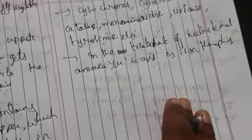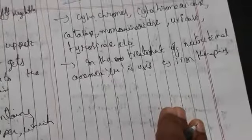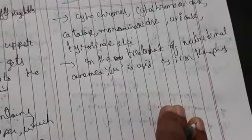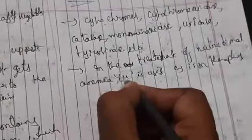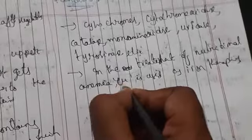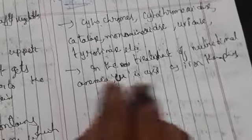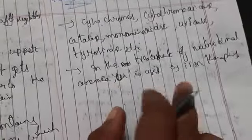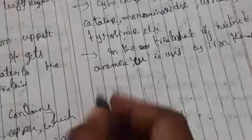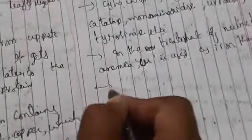If iron is less, we automatically get anemia. In that case, copper is used as a supplementary element which is helpful for iron metabolism.